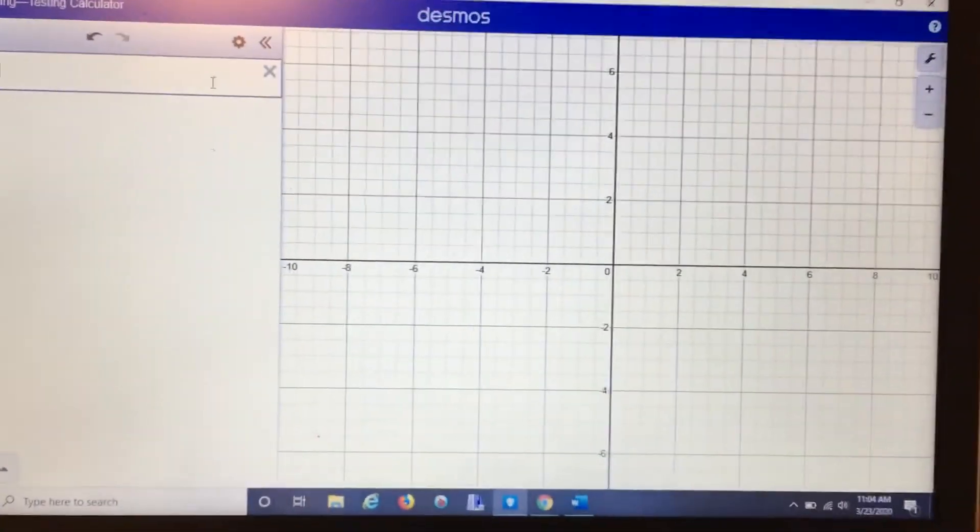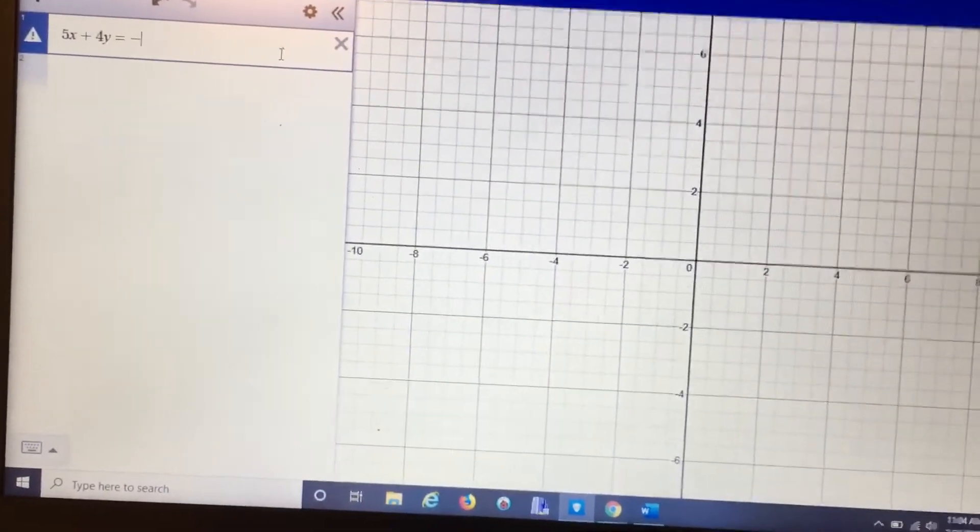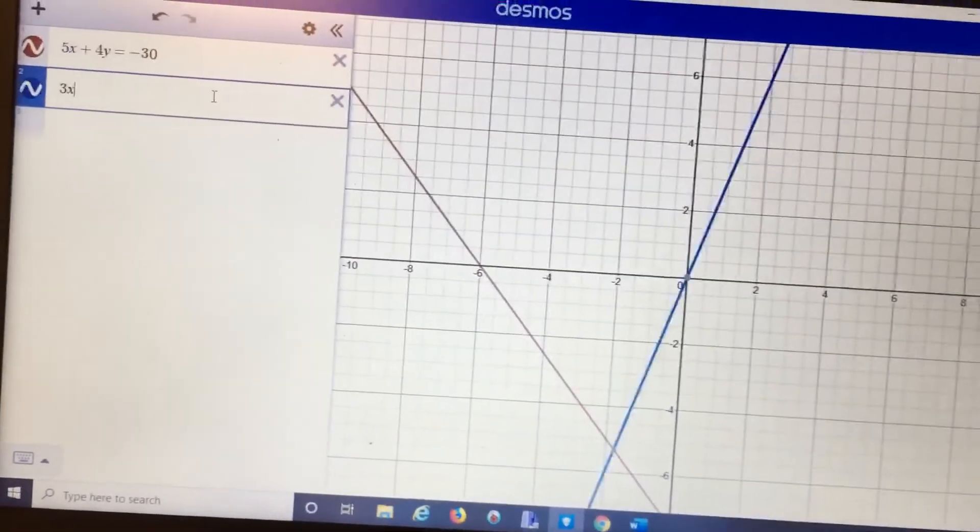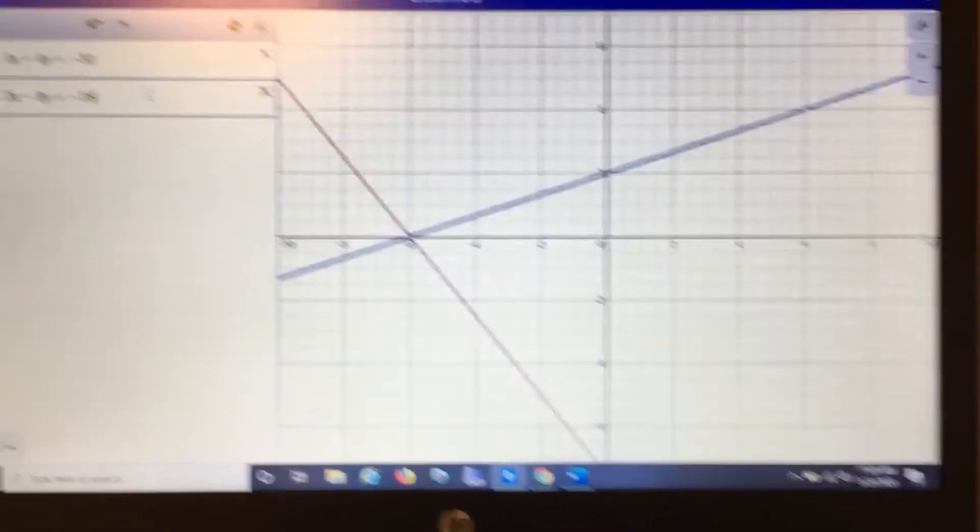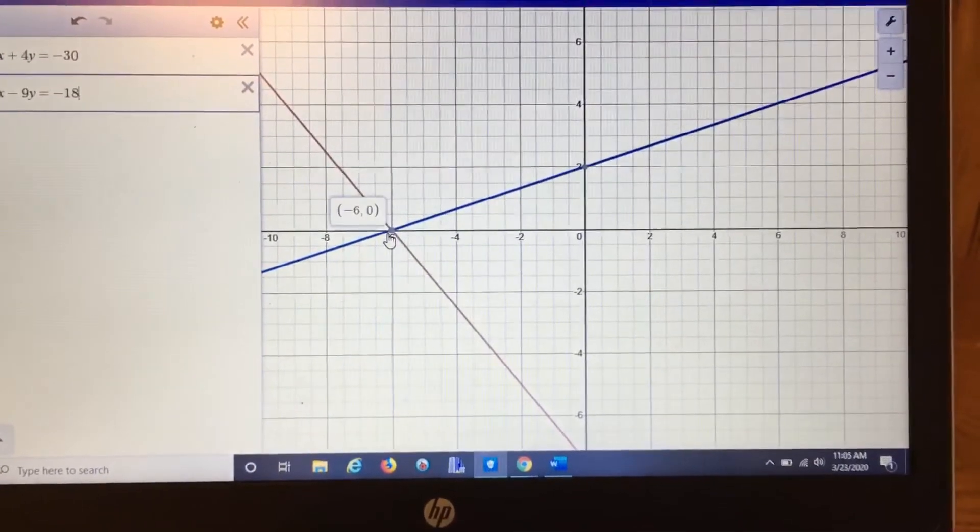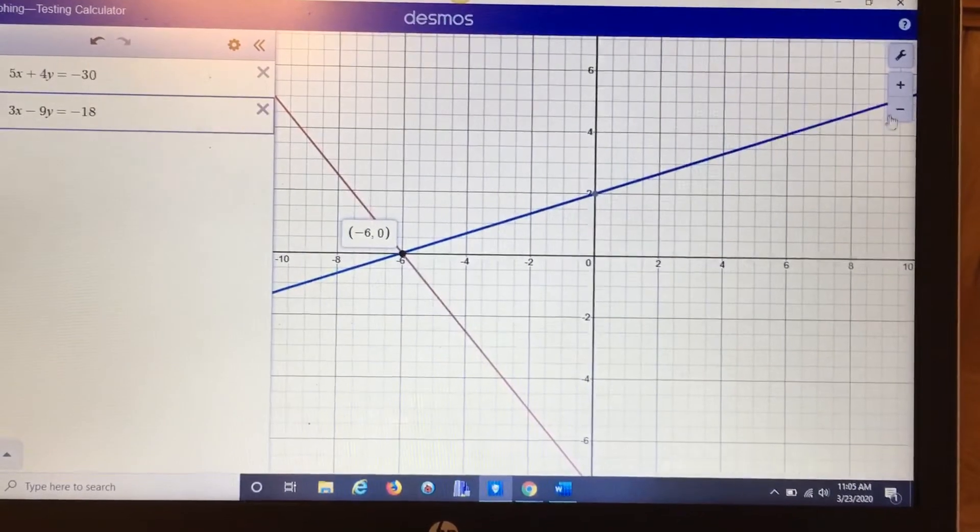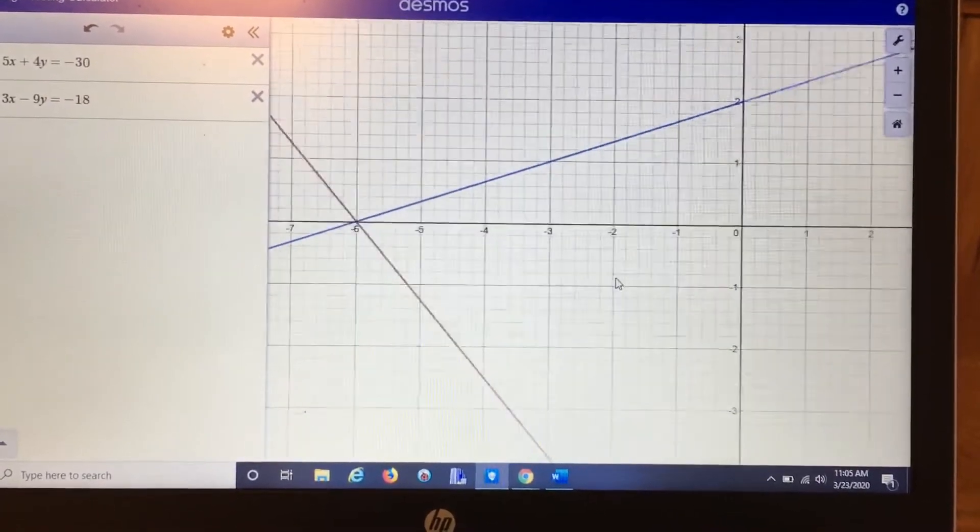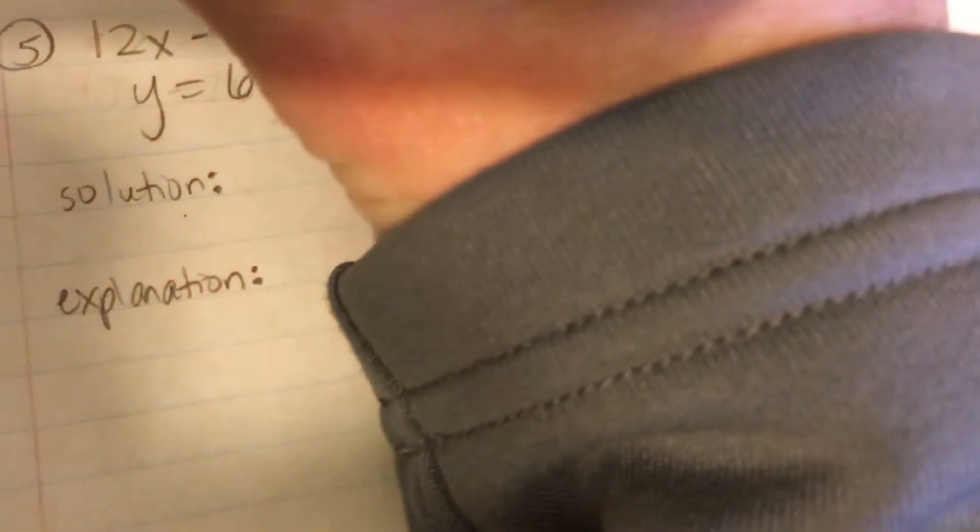Alright, so it was 5x plus 4y equals negative 30. And 3x minus 9y equals negative 18. Okay, and remember the solution is where they intersect. So I'm going to click on it and the answer looks like negative 6, 0. I'm going to zoom in just to double check. But that's exactly where they cross. And yep, they cross it. Negative 6, 0. Alright, so my solution is negative 6, 0.